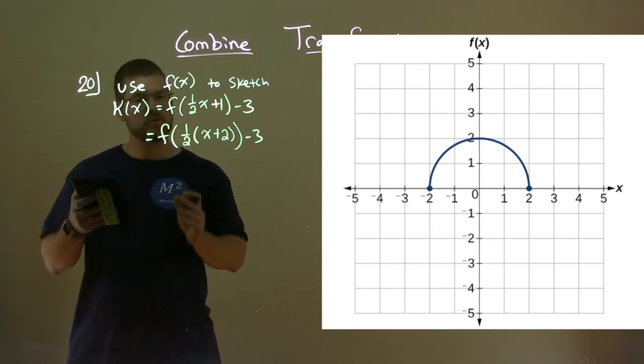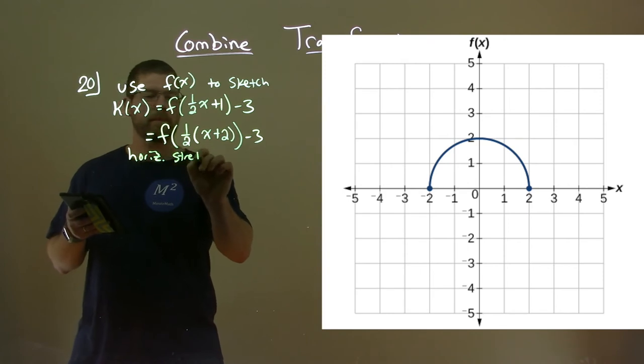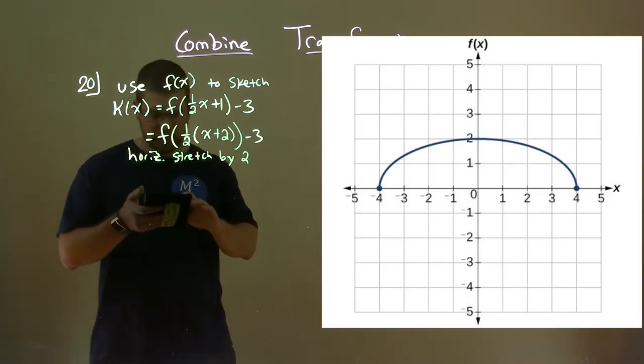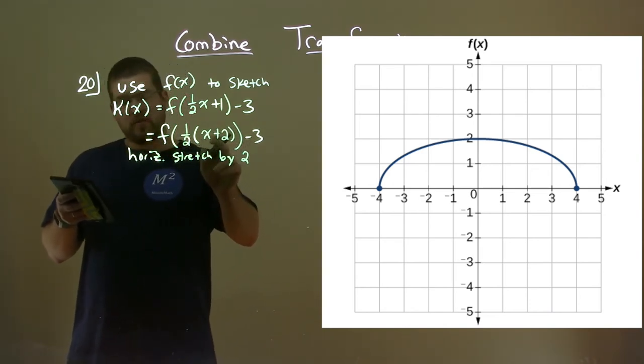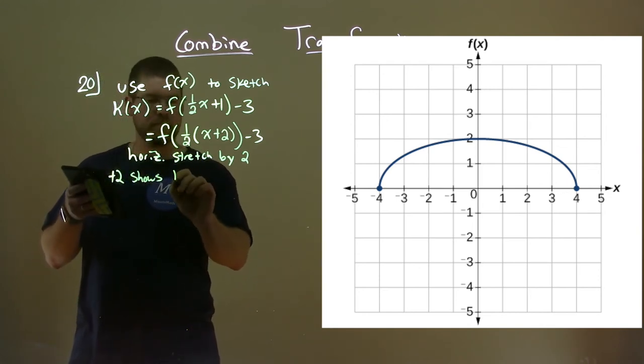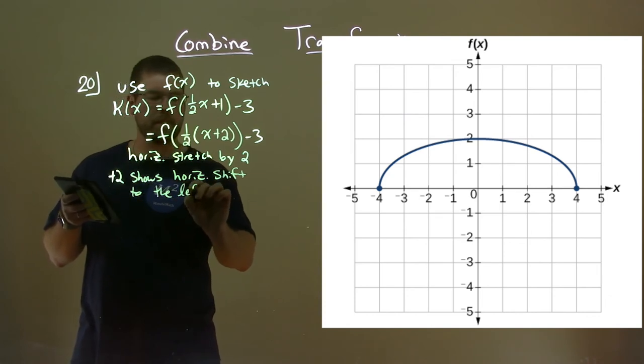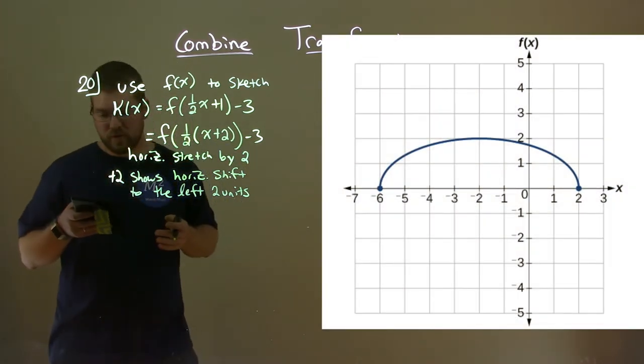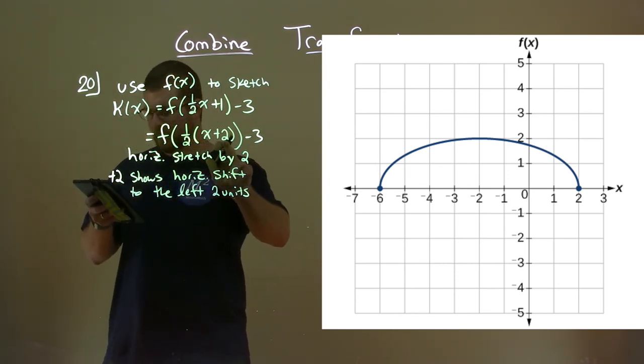Now it's in the form that we can see that this graph here is being stretched by a factor of 2, so horizontal stretch by 2. And we can see that in the graph, you can see it stretched out by 2. Then, the plus 2 right there on the inside shows a horizontal shift to the left, 2 units. So we can see that in the graph now. It's shifted to the left 2 units there, and we can kind of see it more by the endpoints there.